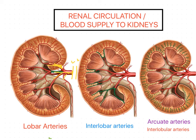Each segmental branch gives a lobar branch. The lobar artery runs towards the pyramid, and all these lobar branches are branches of the segmental branches of the renal artery. They run towards the pyramid — up to the pyramid, this vessel is called the lobar artery.